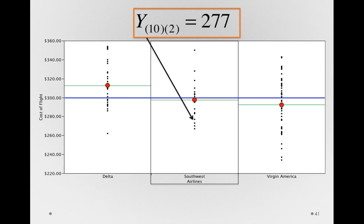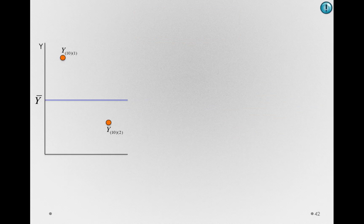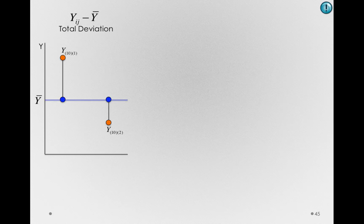Let's also consider Joe, who is Y-10-2 — the 10th person in the second group, Southwest Airlines. Joe spent $277. I've also put in the grand mean, Y-bar. Starting with the total deviations — the Y_IJ minus Y-bar — here is the total deviation for Tom, and here is the total deviation for Joe. Notice that Tom is above the grand mean and Joe is below the grand mean, but each of them is deviating from the grand mean.